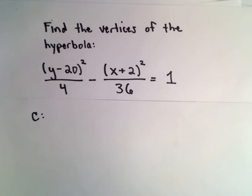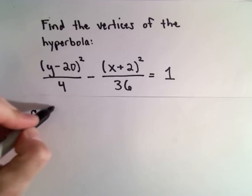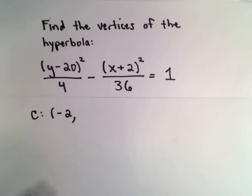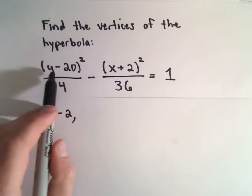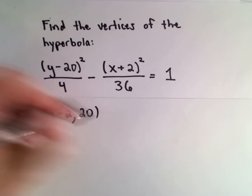So the first thing I'm going to do is pick out the center. I see x plus 2 squared, but instead of positive 2, we use the opposite sign, or negative 2. And then we have y minus 20 squared. Instead of negative 20, we'll use positive 20.